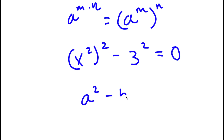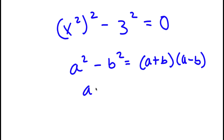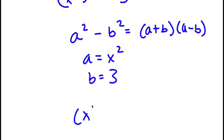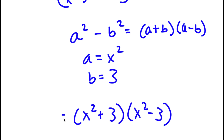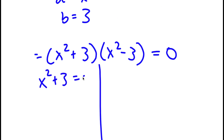Now if I have something in the form a squared minus b squared, this is equal to a plus b times a minus b. So in this case a is equal to x squared and b is equal to 3. So now I have x squared plus 3 times x squared minus 3 equals 0. This gives me two equations: x squared plus 3 equals 0, and x squared minus 3 equals 0.